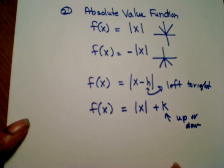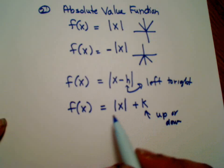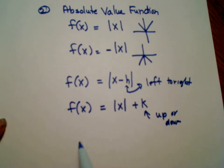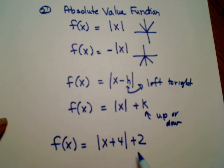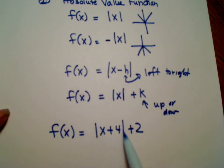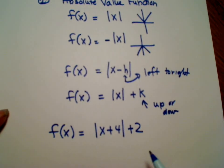So now I'm going to move the information so you can see it. Okay, so let's take a look. Suppose I gave you the function f(x) is equal to the absolute value of x plus 4 plus 2. Right away I notice something. It's an absolute value. So I know it's going to be a V.